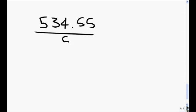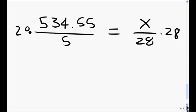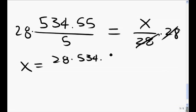The first proportion of $534.55 to 5 days equals some X dollars to 28 days. If I multiply both sides by 28, and use algebra, X equals 28 times $534.55 divided by 5.